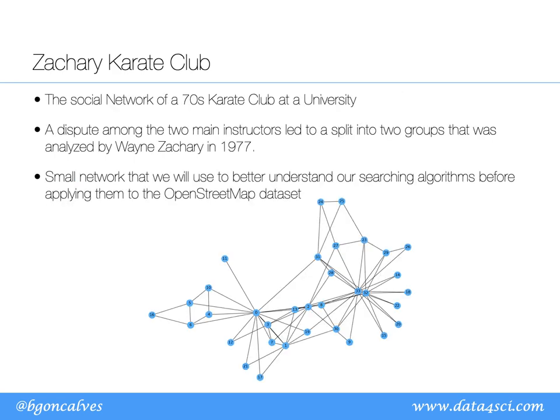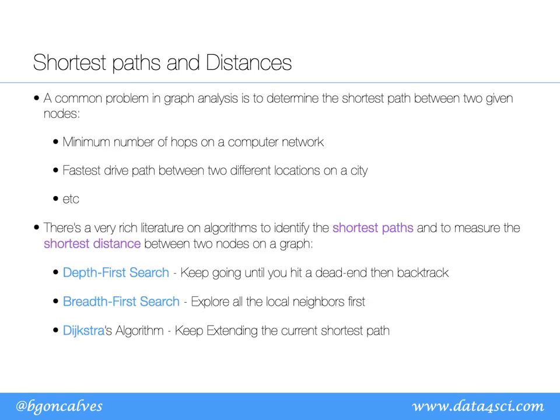To clarify these concepts, let's consider the Zachary Karate Club — the friendship network of members of a karate club at a university in the 70s. It's a relatively small network that's easy to visualize, making it a good case study. In particular, we want to understand how to identify the shortest path or shortest distance between pairs of nodes. Three typical algorithms we'll cover are: depth-first search, breadth-first search, and Dijkstra's algorithm.